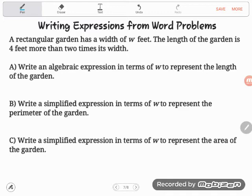Let's take a look. It says a rectangular garden has a width of W feet - welcome to the world of algebra. We don't know how wide the garden is, so we're just going to call it W. W is standing in for an unknown or missing number. Then it says something interesting: the length of the garden is four feet more than two times its width. It doesn't tell us what the length is, but it tells us how the length is related to the width.